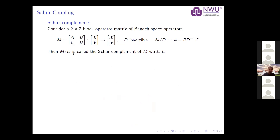Let me get started. We'll begin with Schur coupling, which starts with the Schur complement. You have a two-by-two block operator matrix with Banach space operators as entries. You assume that one of the diagonal operators — say D — is invertible, and then you consider a perturbation of the other operator A. That's known as the Schur complement of the two-by-two block operator matrix with respect to D.